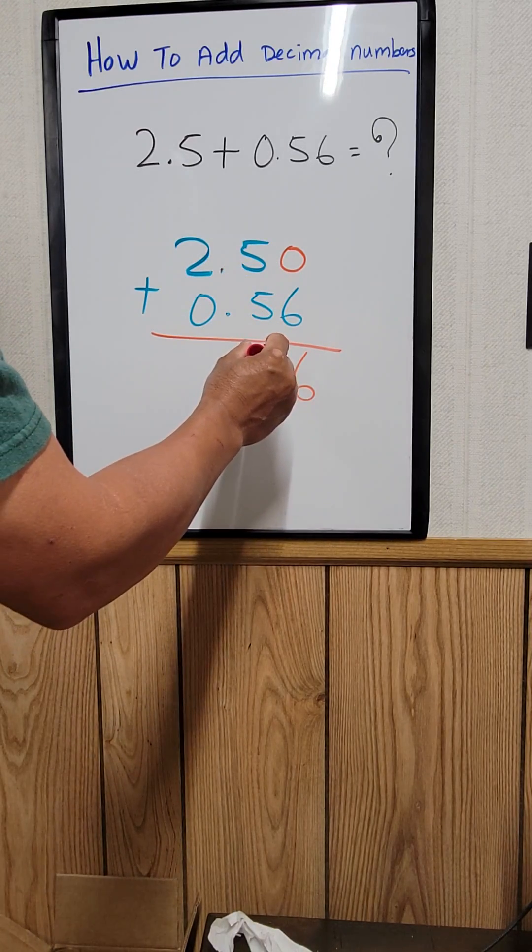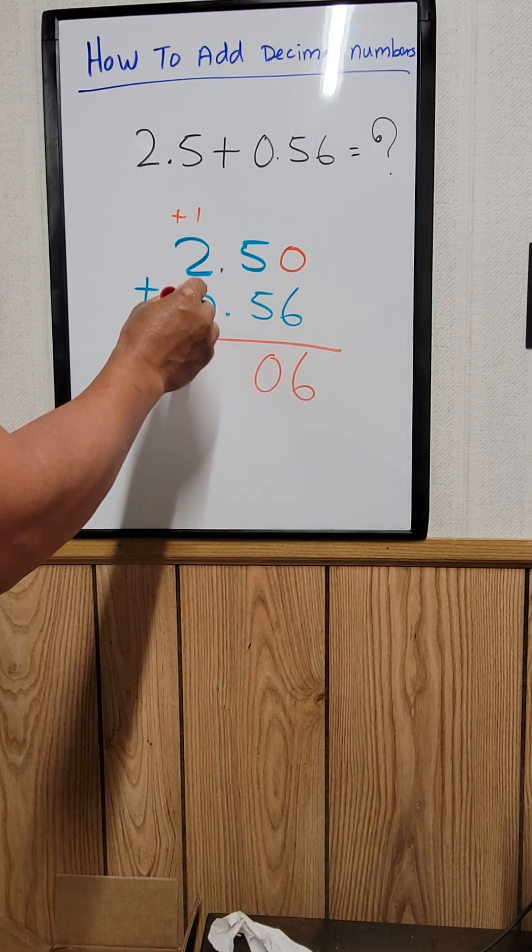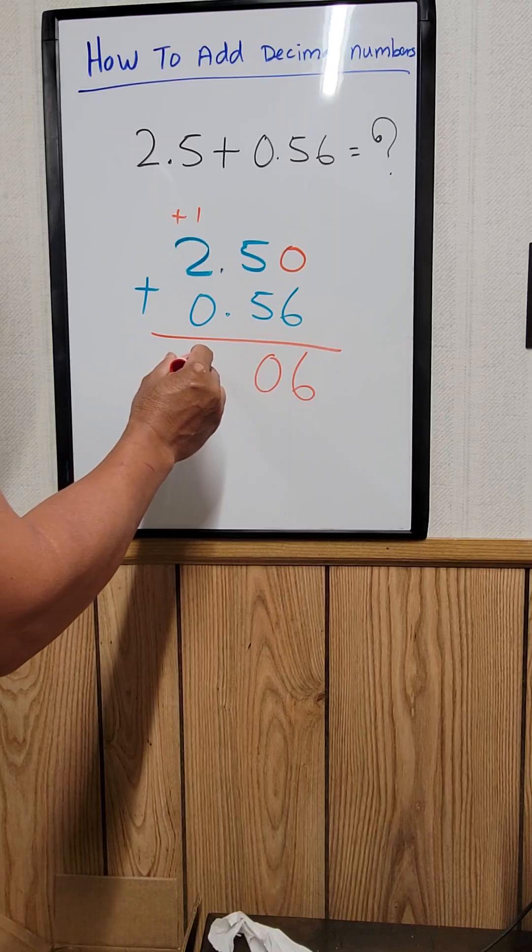5 plus 5 is 10, and then carry the 1. 1 plus 2 is 3. 3 plus 0 is 3.